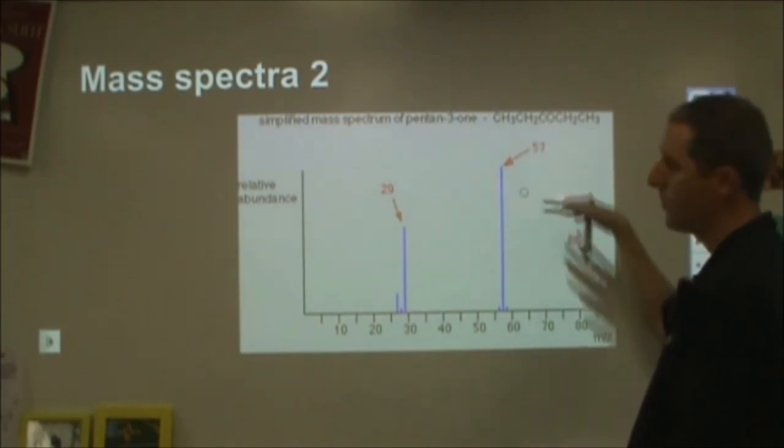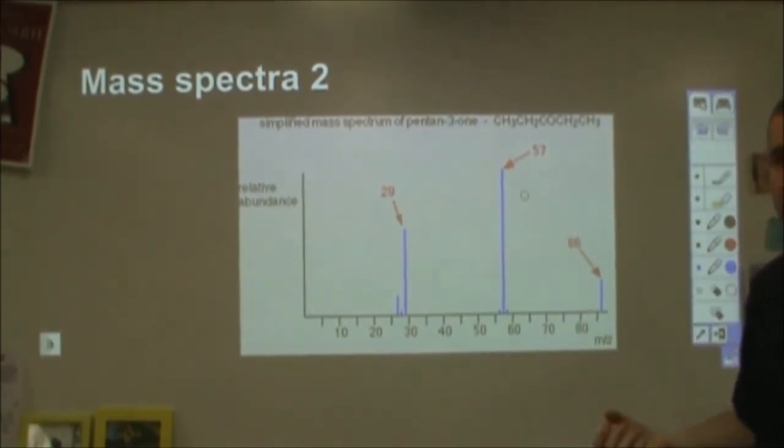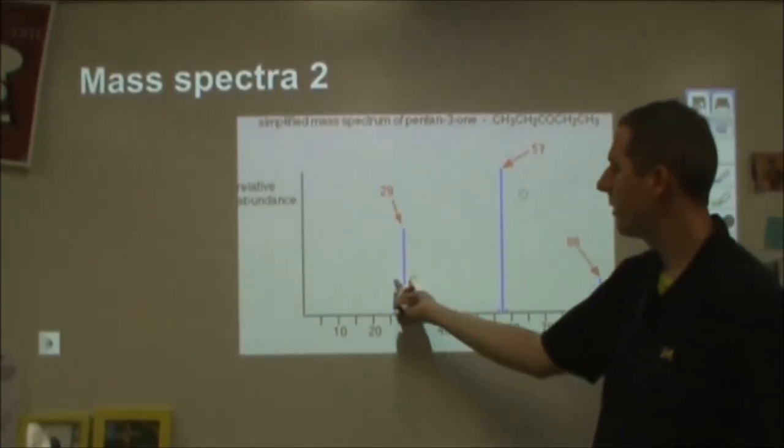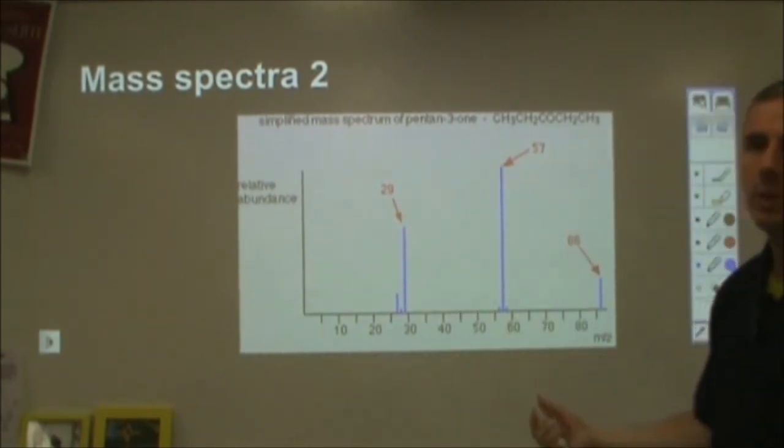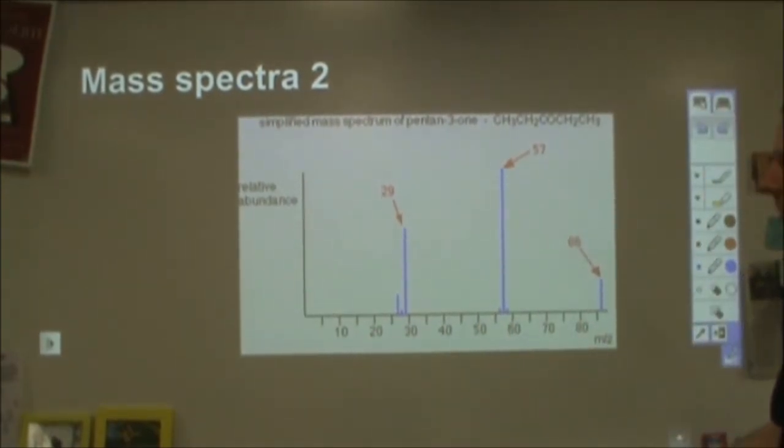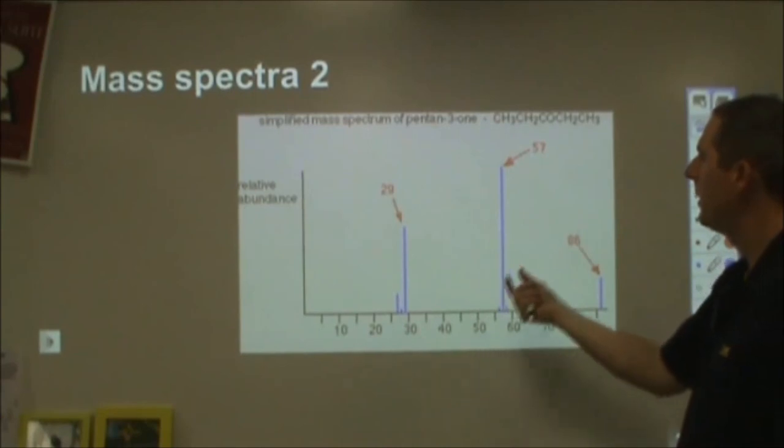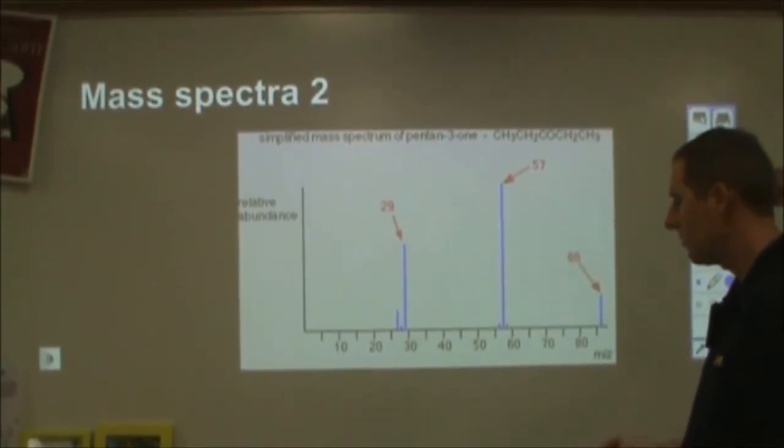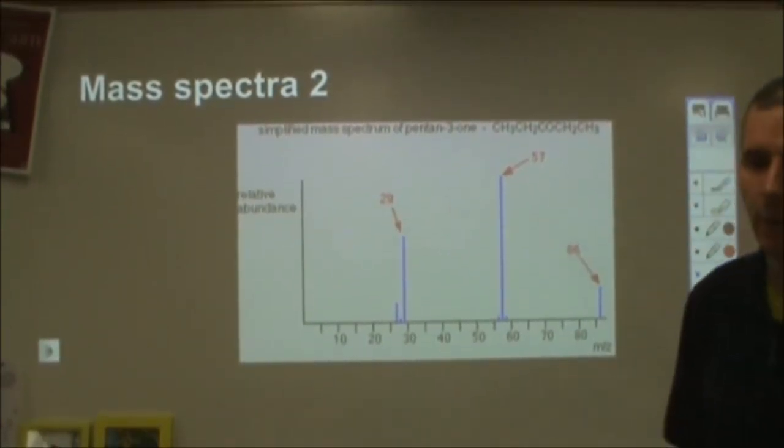But then at that point, what you want to do is more at the end when you think you know what you have, you want to look and say, okay, well, how would this split apart? And what would the masses of those fragments be? And then look to confirm that you've chosen the correct formula from that. So some stuff you can do at the very beginning, but also it's very good at the end to be able to go through and confirm what you have or what you don't.